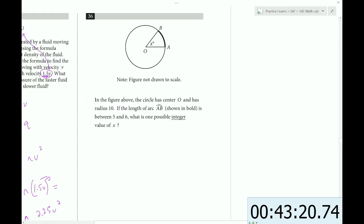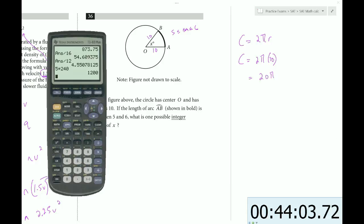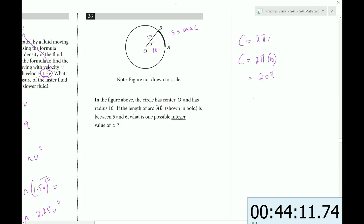In the figure above, the circle has center O and radius 10. So we can label these as 10. The length of arc AB is between 5 and 6. What is one possible integer value of X? We don't know what this value is, but it's between 5 and 6. So one way to do this is to use arc length formula. We can also use an idea of circumference. I like the idea of circumference here. So circumference is 2πr. So circumference in this case is 2π times 10. So the circumference would be 20π. And if we multiply that out, 20 times π, that would equal 62.83.